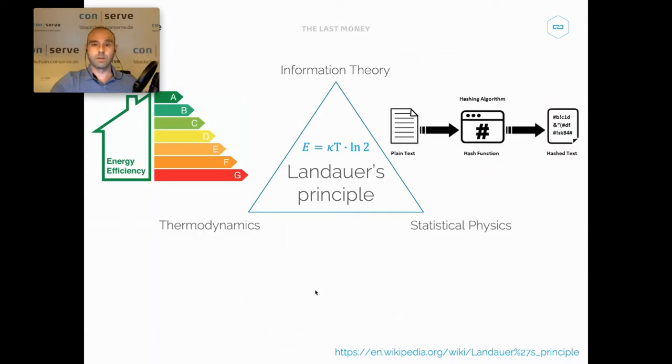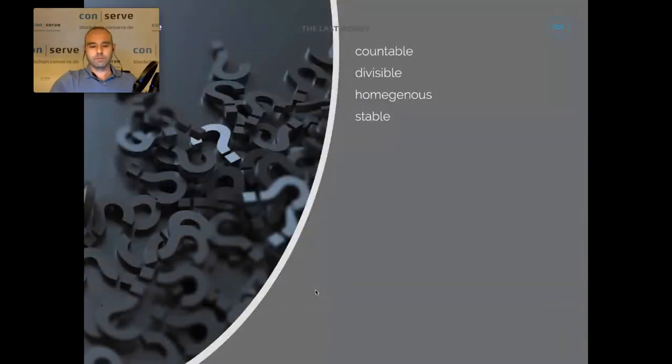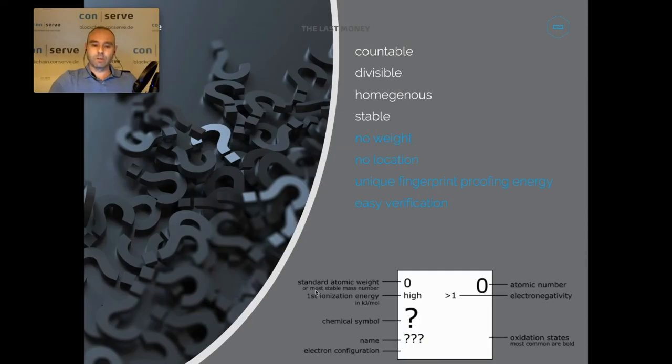And this principle is applied in computer science using so-called secure hash functions, which results in what we know as a proof of work. And as a result, you get a self-proving fingerprint and using statistical physics and assumption on the currently available computing technology, you can derive from just looking at that number, how much energy was required to produce it. More specifically, how much energy was required to remove so much entropy from the resulting hash.